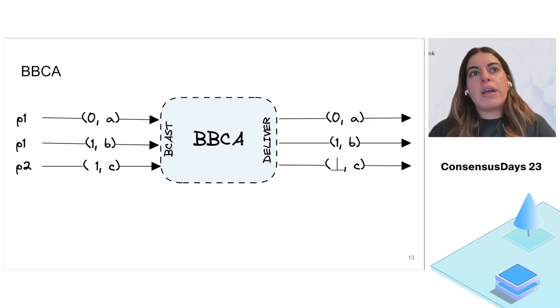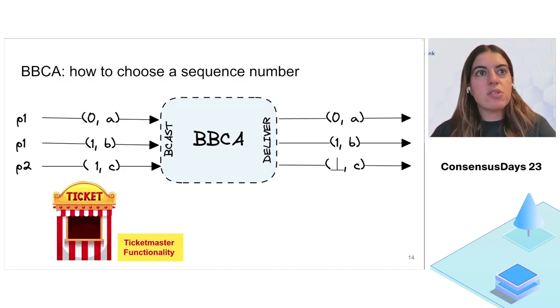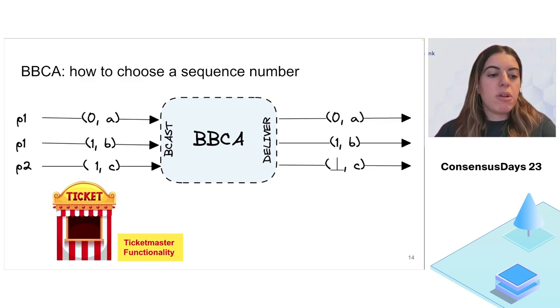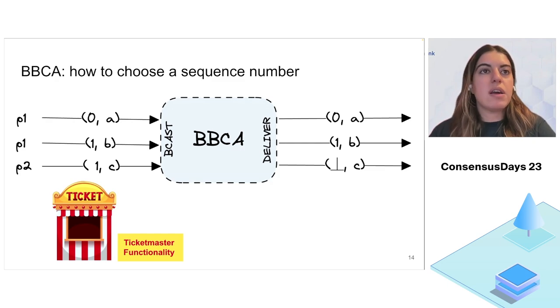The next question you may ask is, if we always have conflicts or contention on sequence numbers, how do we coordinate validators? This is why we introduce a Ticketmaster functionality. I'll leave it abstract and won't go into much detail because it can be implemented with several policies and we still have work in progress there, but it can be something as simple as round-robin assignment of sequence numbers to validators.